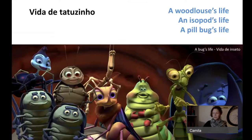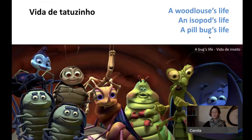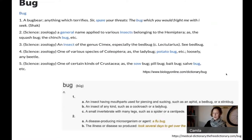If you remember the movie, not all the animals in it are actually insects, because in English we can use the term 'bug' for more than just insects. So what does 'bug' refer to? How to best translate the title of this lecture? Would it be 'a wood louse's life,' 'an isopod's life' — maybe more technical — or 'a pill bug's life,' which sounds more like the original title but doesn't really refer to all the animals in this group.